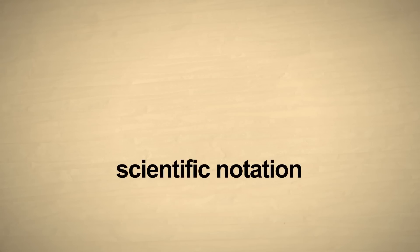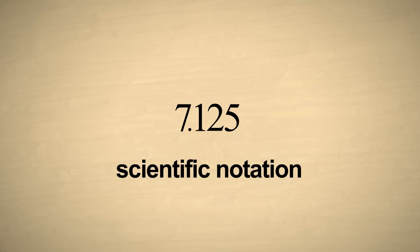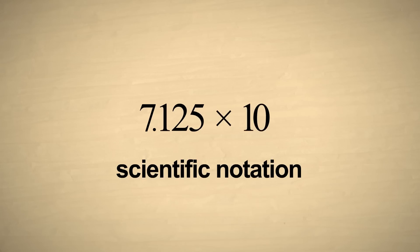Numbers written in scientific notation consist of two parts. The first part, which can be positive or negative, is written as a single digit, which can optionally be followed by a decimal point and one or more additional digits. The second part is a multiplier for the first part. This multiplier is always written as ten with an integer exponent. Since the exponent can be positive or negative, the multiplier can make the number as large or small as we like.